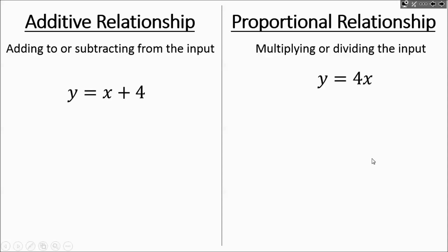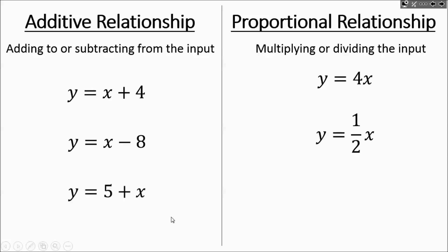You could have two unknowns and you're subtracting the input by eight. You could have taking one-half times x, the input. It's the same concept — you're just adding something or subtracting something from the x value. You could also have dividing the input by a number.